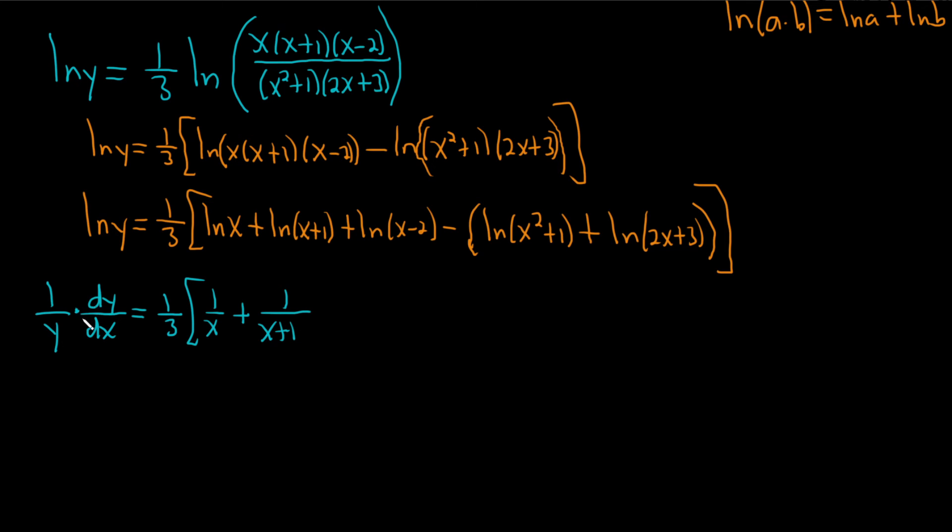And then just like we did here, we multiplied by the derivative of the inside, which is just dy dx. Here it's 1, right? The derivative of x plus 1 is 1. Plus, same thing here, 1 over x minus 2 times the derivative of the inside, which is 1.